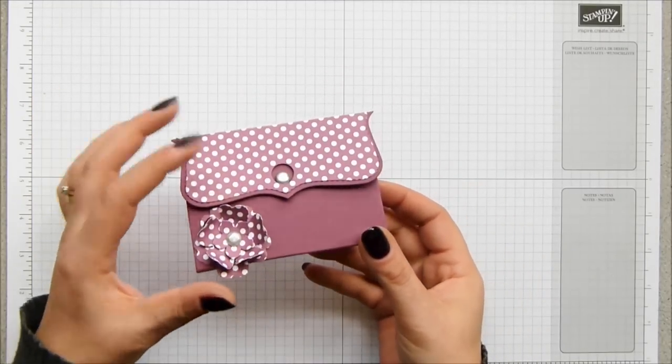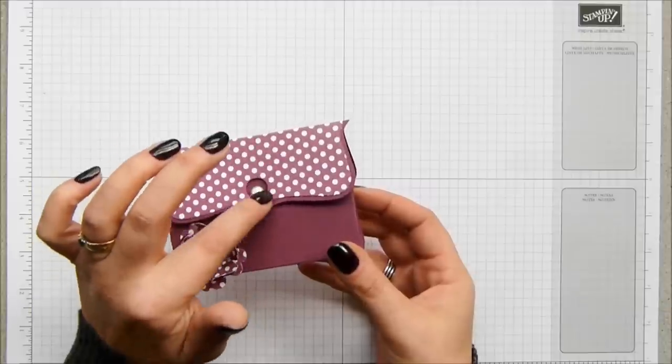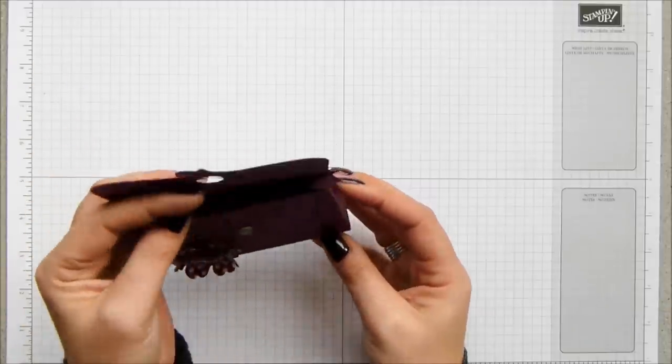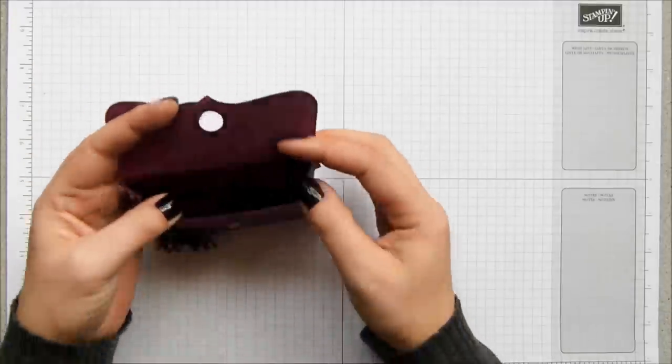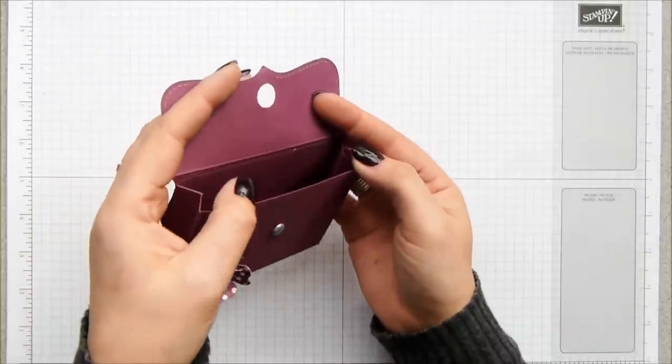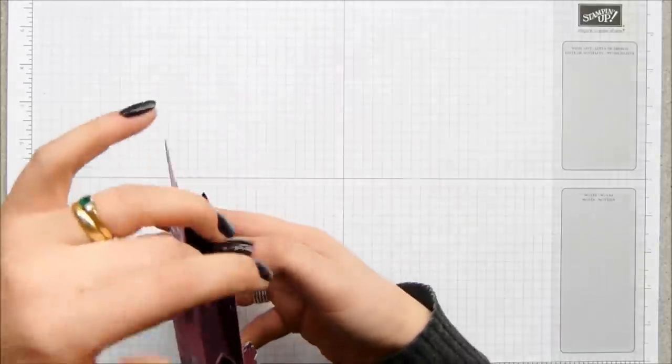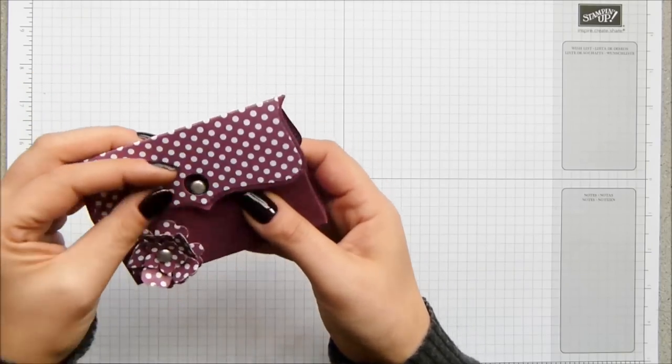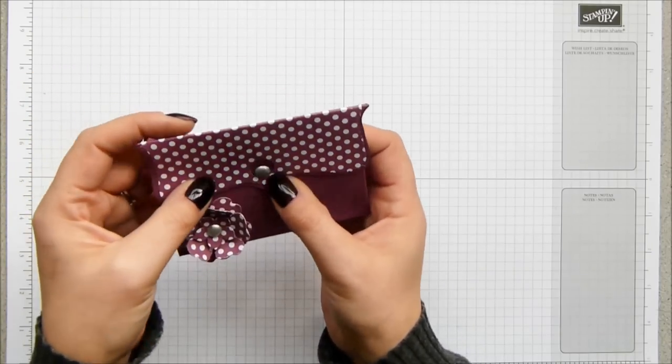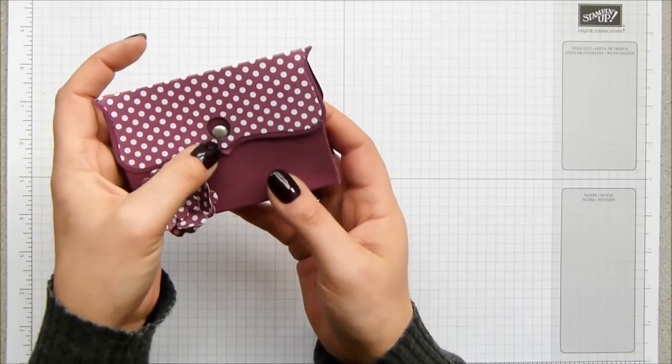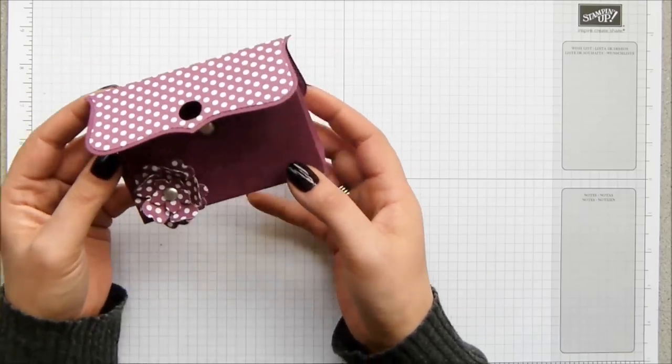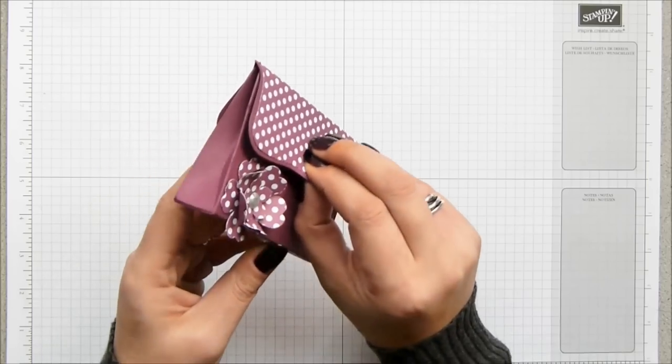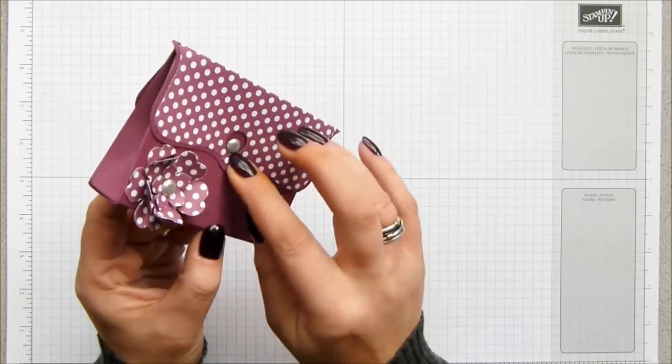This is my original prototype that I made and it has got a brad there to close it, but I don't like it enough so I'm going to show you a slightly different way to do it. This is how it opens, it's quite a cute bag. It's similar to one that I made recently. Don't use a brad and a hole, it doesn't work, but I will show you a better way to close your bag.